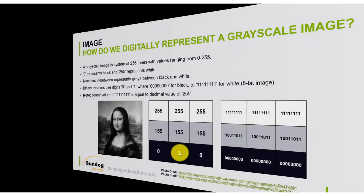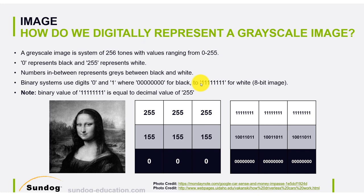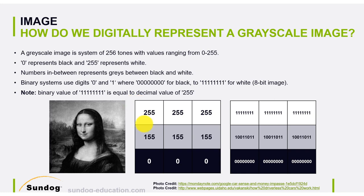Now we're interested in how we can represent an image in a digital format. Before jumping into a colored image, let's discuss grayscale — a black and white image. Take the Mona Lisa: this image is stored digitally in the form of pixels. Each pixel has a number ranging from 0 to 255. A value of 0 means black, and as you increase the number you increase the brightness toward white.